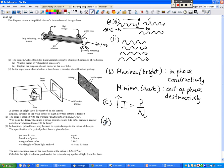D is the calculation part. The cross-sectional area of the laser beam at the retina is 1.5 times 10 to the negative 9. These are pulsed onto the retina to heal sight defects. Calculate the light irradiance produced by the retina during a pulse of light from this laser. So we know that that's the equation here that we're going to use. We don't have power, however, but we do have energy here, and we do have time.